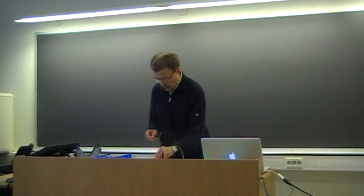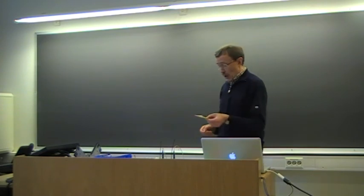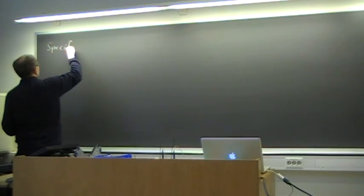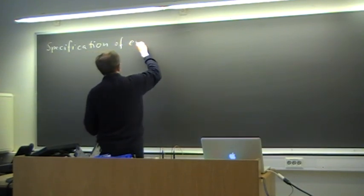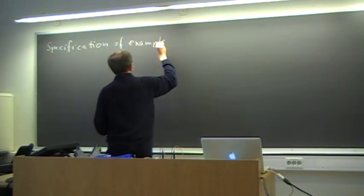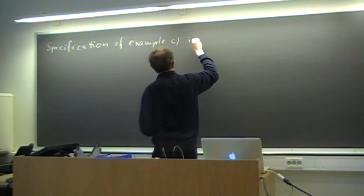Good morning and welcome. Yesterday we started the discussion of the two-dimensional convection-diffusion equation. Before we continue on that, I would like to make a few corrections because at some points I was not precise enough, which I found out later. The first point is the specification of the example that we have for the convection-diffusion equation, which was example C in the current chapter.